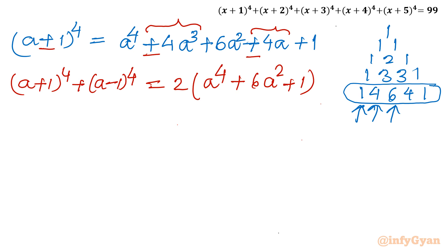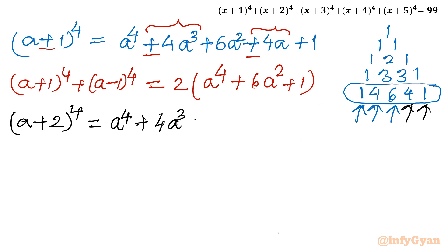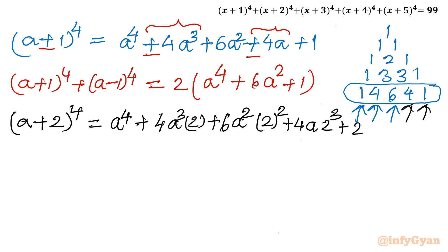Now let us do the same for (a + 2)⁴. Using the same expansion with coefficients 1 4 6 4 1: a⁴ + 4a³·2 + 6a²·4 + 4a·8 + 16. For (a − 2)⁴, the sign changes on odd-power terms. Adding them together: (a + 2)⁴ + (a − 2)⁴ = 2(a⁴ + 24a² + 16).